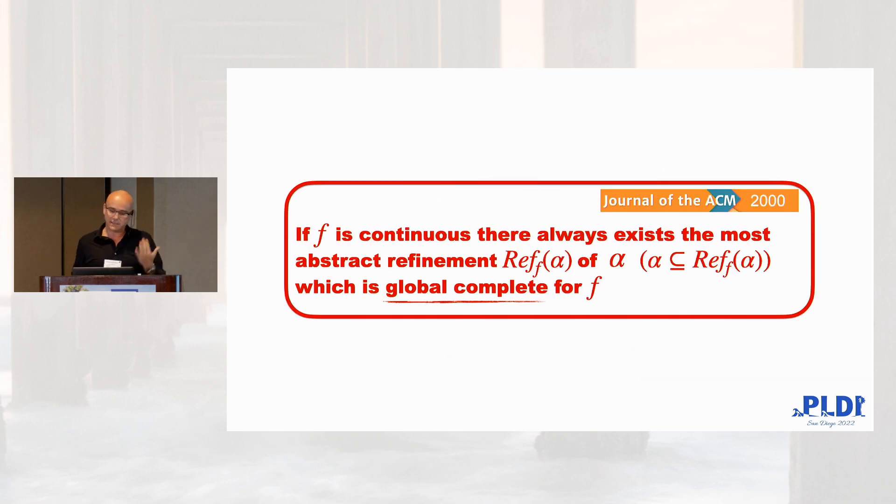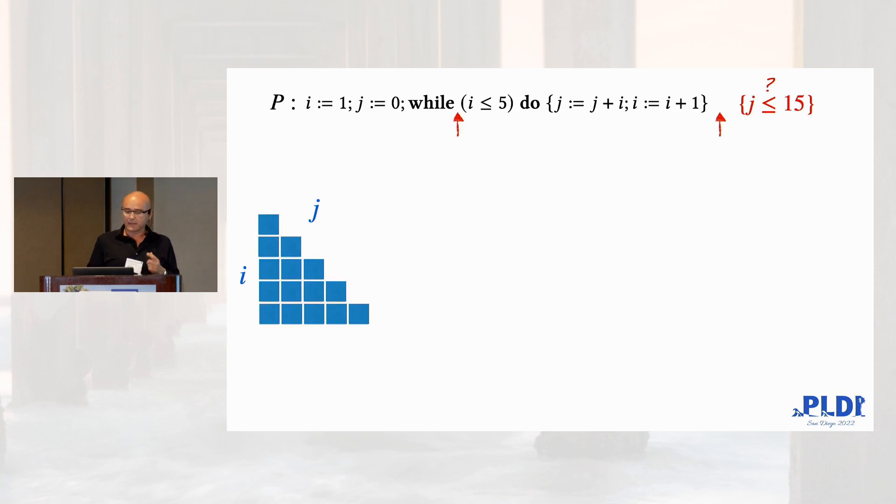We know since the year 2000 that any Scott continuous function, for any Scott continuous function, which is a predicate transform in general, you can always refine an abstract domain with the most abstract domain that includes the original one and makes that function complete for all possible inputs. But this problem, which is a refinement strategy, has an issue.